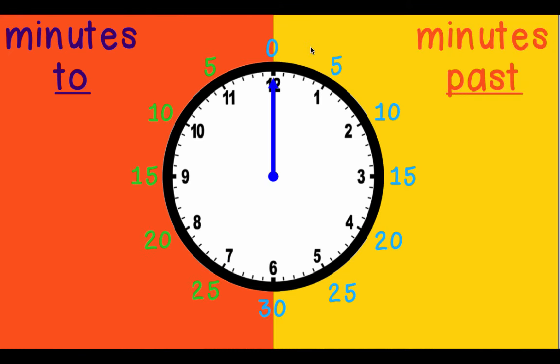So we still need to understand our minutes past and our minutes to sides of the clock. We need to remember that the large numbers around the clock are our hours, but they also represent lots of five minutes. And we can count by fives from the twelve for past, or we need to think about how many minutes to go until the long hand or the minute hand gets back to the twelve.